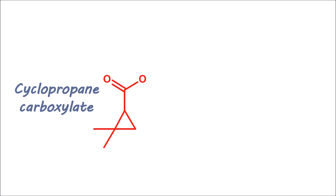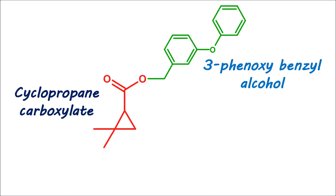Regarding the chemical form of permethrin: permethrin is a synthetic pyrethroid and a cyclopropane carboxylate derivative. It forms an ester bond with 3-phenoxybenzyl alcohol. On the cyclopropane ring at the second position, it is attached with a 2,2-dichlorovinyl side chain.